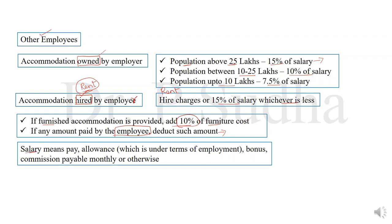The other important thing is the definition of salary. We have been talking about 15% of salary, 10% of salary, and so on. Salary here means basic pay, allowances which are under terms of employment, bonus, and commission payable monthly or otherwise. Now let us see how to work out a problem by applying these rules.